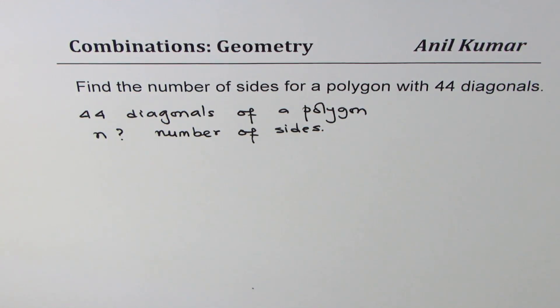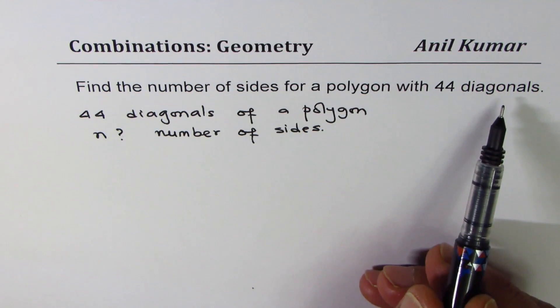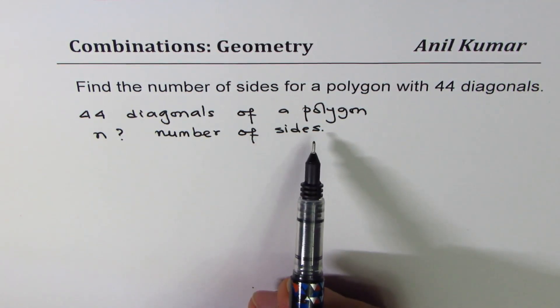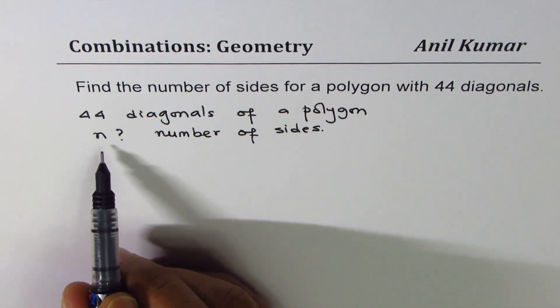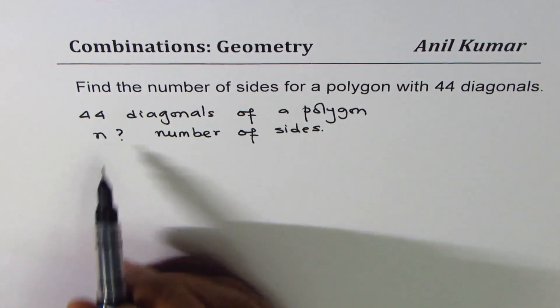Well here is the solution. We are given 44 diagonals, we want to find the number of sides of a polygon. Let us see, the number of sides is n, right? That means we have n points which we call vertices.